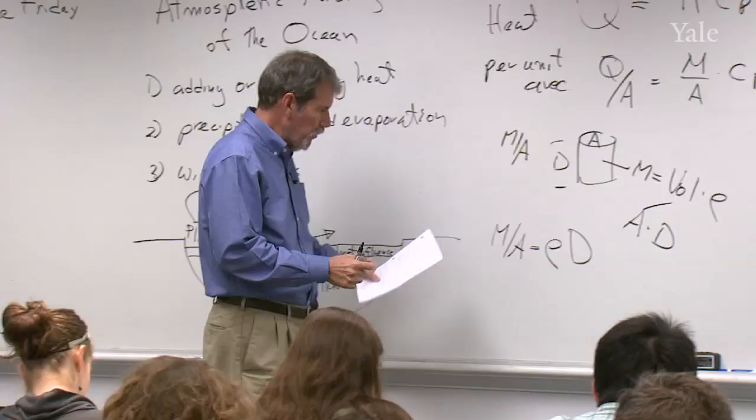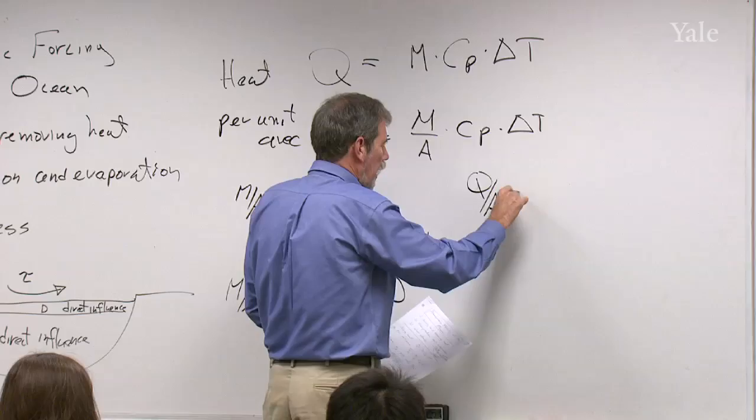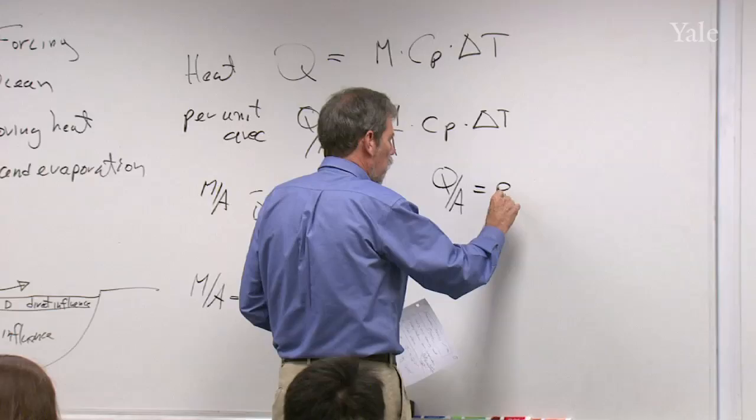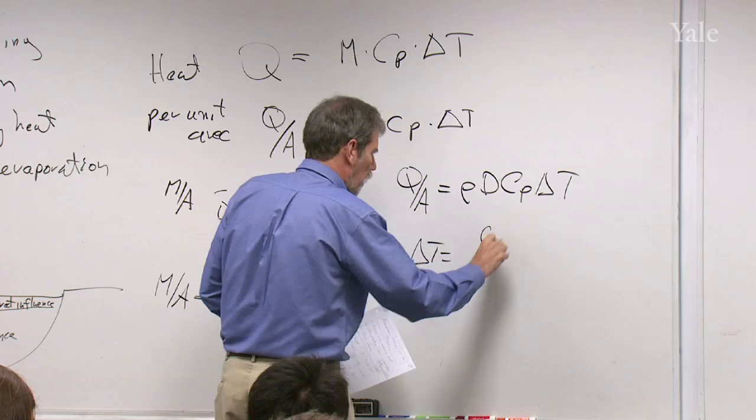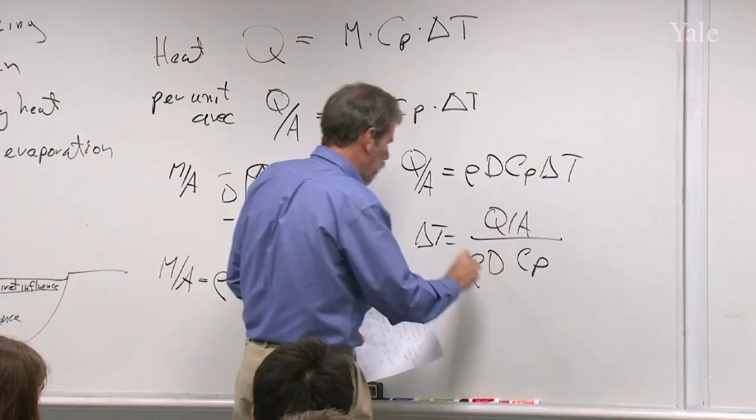So then let me just take that and plug it into this formula. I get Q over A. That's the heat being added per unit area. Plugging this in, I get rho D Cp delta T. And solving that for delta T, I get Q over A over rho D C sub P. And I think we've seen that formula before, but there we have it again.